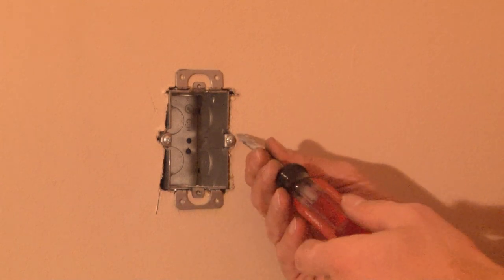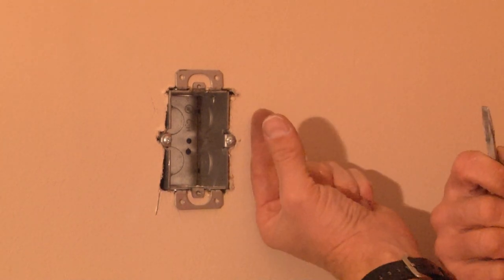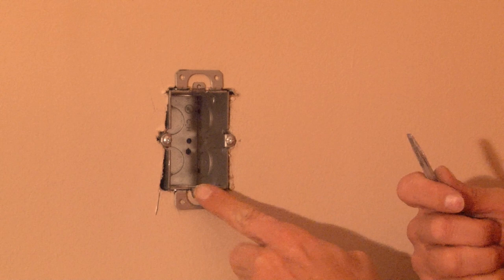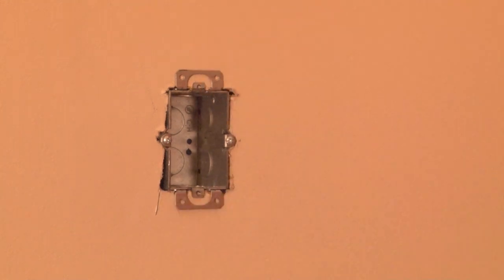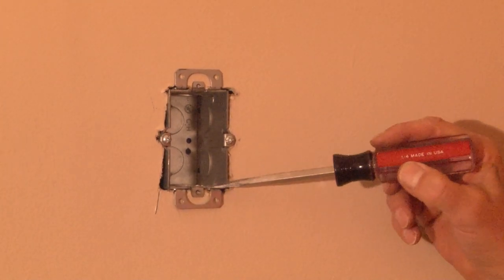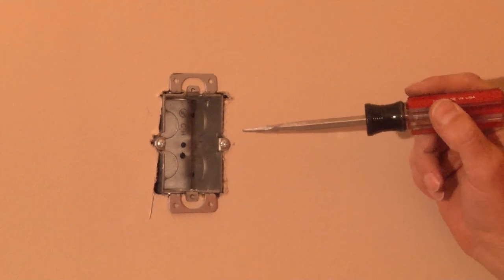Now by turning the set screw provided, the clamp bites on the drywall providing a safe and secure installation for any low-voltage or power device that needs to be added to this wall.